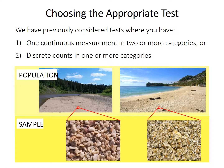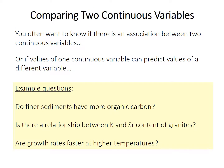So far in this course we've considered tests designed for one continuous measurement in predetermined categories, or for discrete counts in one or more categories. But what if you want to test for an association between two continuous variables, or whether one continuous variable can be used to predict a different one?